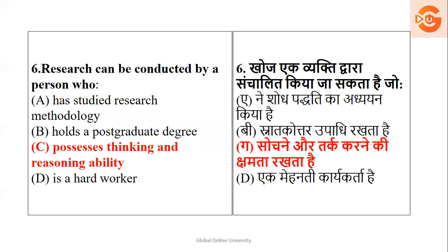Question 6: Research can be conducted by — a person who has studied research methodology, who holds a postgraduate degree, who possesses thinking and reasoning ability, or a hard worker? Definitely not B and not D. Students get confused between A and C. To conduct research, you need analytical ability, logical thinking, and reasoning ability — rather than just having studied research methodology. So the right option is C.